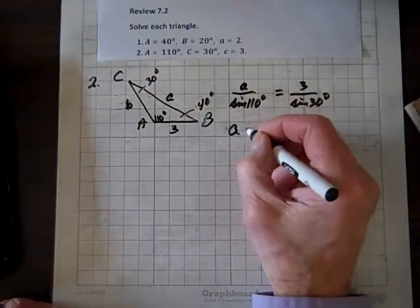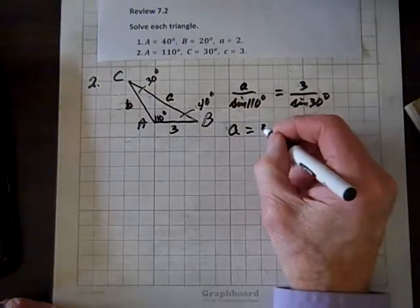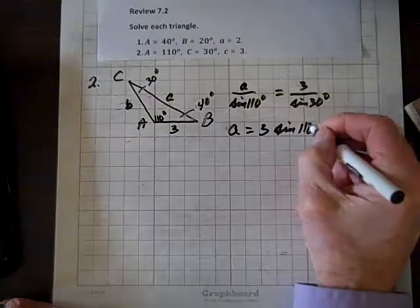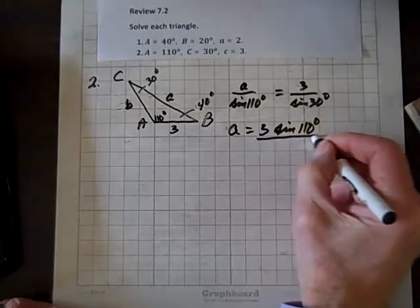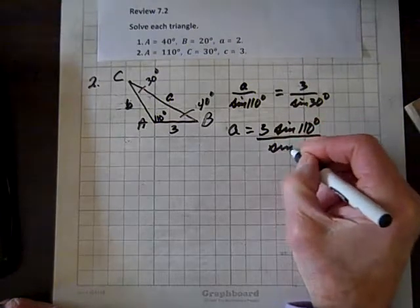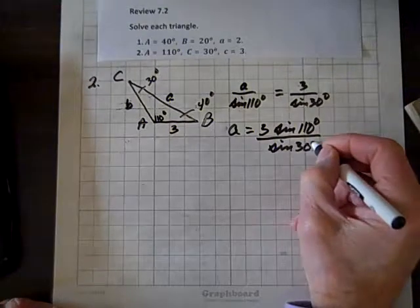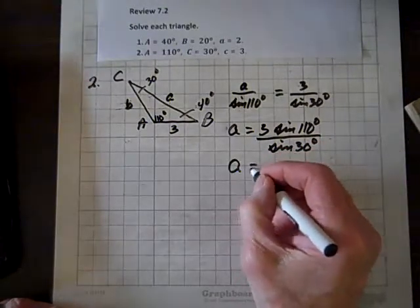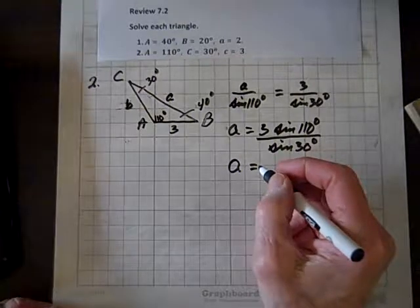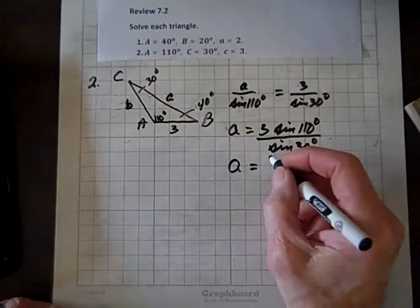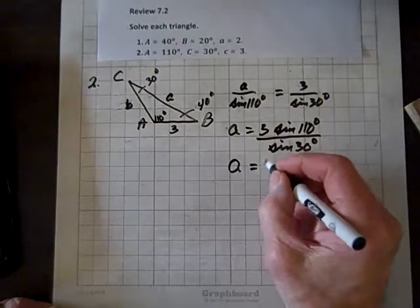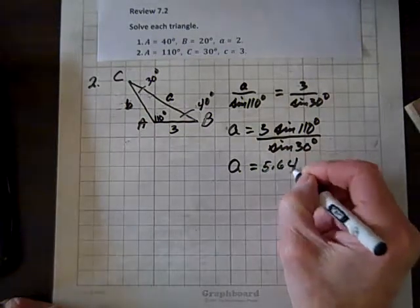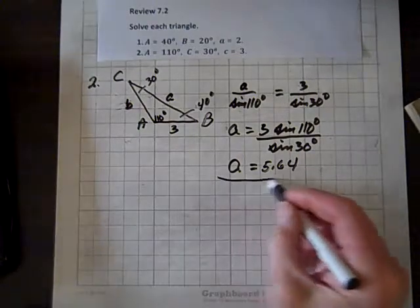A equals 3 times sine of 110 degrees over sine of 30 degrees. When I calculate that, I get 5.64. So that's A.